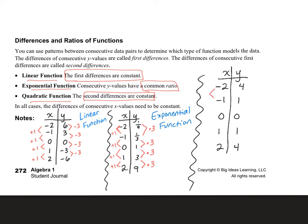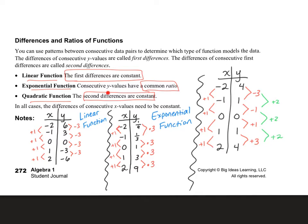In our last example, the x's are adding 1 each time, but the y values are subtracting 3, subtracting 1, adding 1, and adding 3. At first glance this does not look to be anything. However, if you look at the second differences — the differences of those first differences — it would be adding 2, adding 2, and adding 2. Since the second differences are constant, this is a quadratic function.